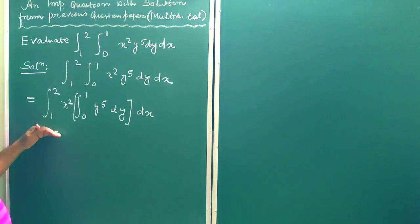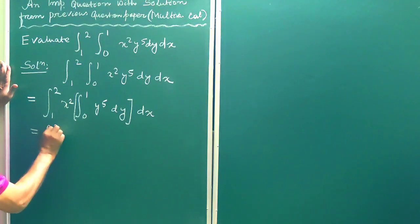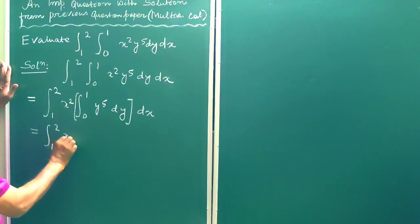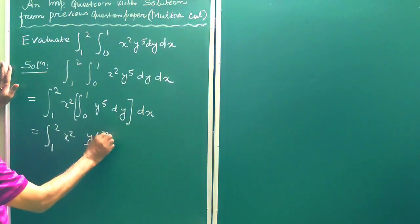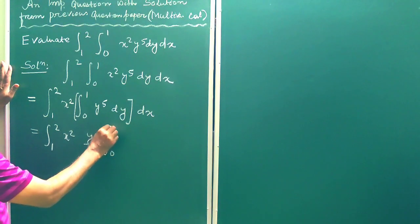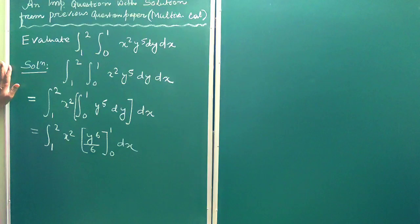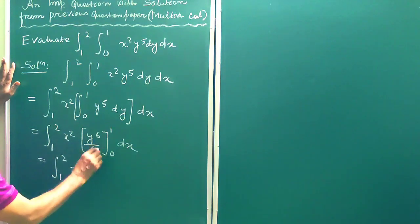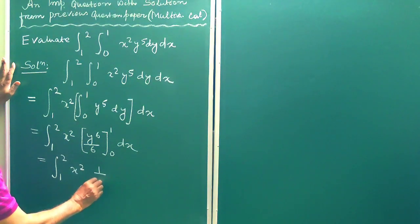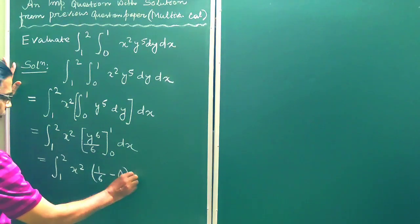So this is equal to 1 to 2 integration x square, this is y to the power 6 by 6 after integration, the limiting value is from 0 to 1, then this is dx. So this is equal to integration 1 to 2, x square, putting on upper limit which is 1 to the power 6 is 1 minus 0 dx.